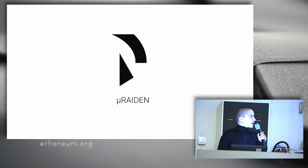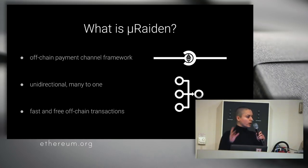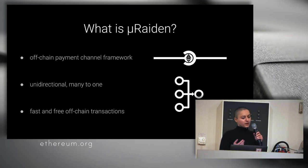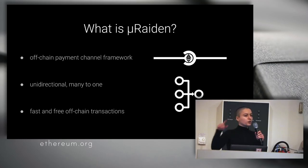The difference between them is that MicroRaiden is a framework for off-chain payment channels, but unidirectional — from many to one — as opposed to Raiden Network, which is many to many. So Raiden Network is more complex in the sense that it needs routing and fees to incentivize nodes in the system, so they can route payments without having to always open channels between the sender and receiver.